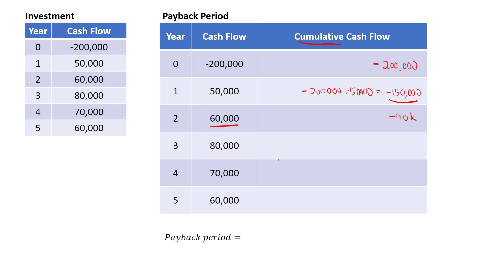By the third year, the company will receive another $80,000. So negative $90,000 plus $80,000 gives another negative $10,000. That means the company needs another $10,000 to recover all its capital.